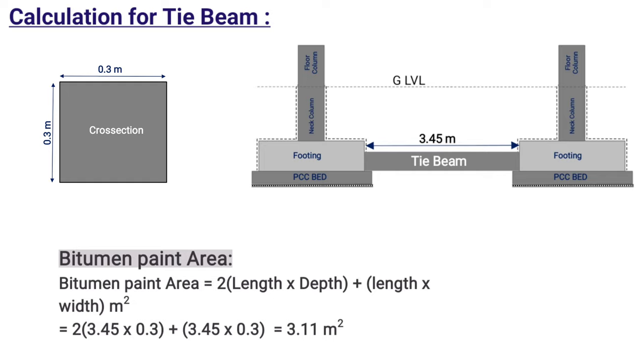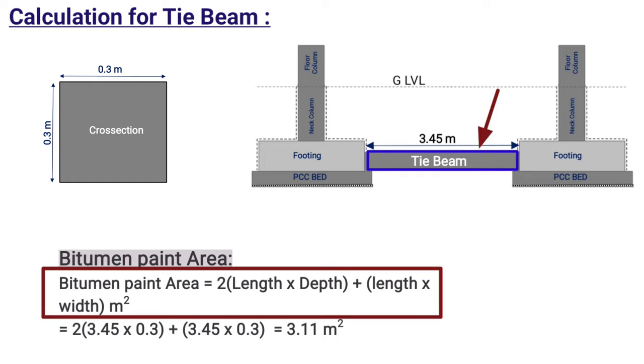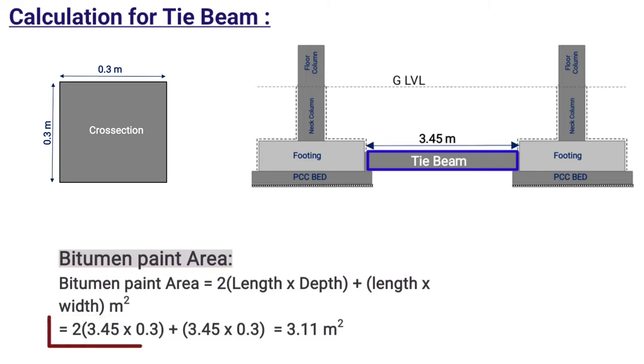The bitumen paint area will be equal to surface area of this side end and the side opposite to it, plus surface area of its top end. So the paint area will be equal to twice length times depth plus length times width. On substituting these values, we will get bitumen paint area equal to 3.11 meter square.